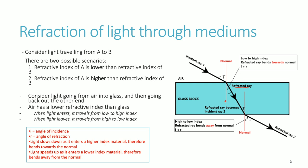Going from a higher refractive index to a lower refractive index, the light will bend away from the normal. As the light leaves the glass block, glass has a higher index and air has a lower index, so going from glass to air means going from high to low index — the light travels away from the normal. To summarize: low to high index, light bends towards the normal; high to low index, light bends away from the normal.